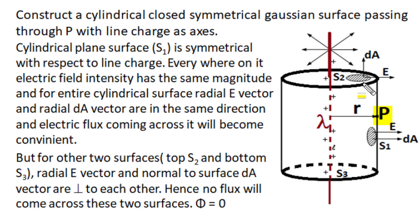Now here on this closed cylindrical Gaussian surface, we have three different surfaces. One is this cylindrical surface, we call it S1. Other two are circular plane surfaces: one is S2 at top and another one is S3 at bottom.